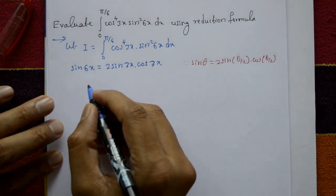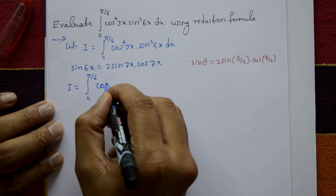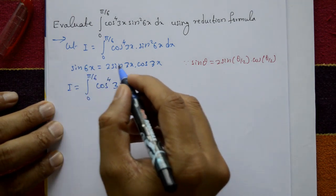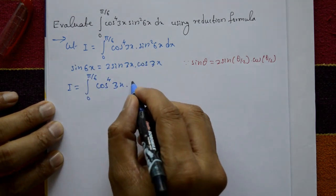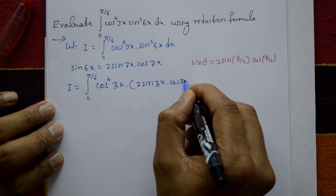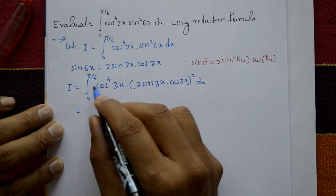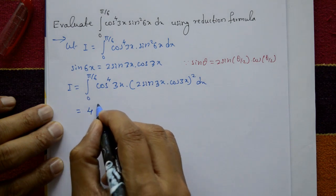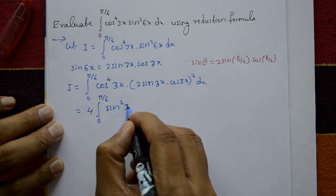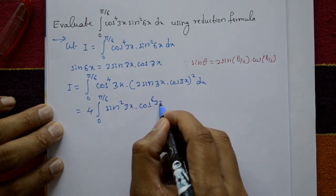Using this formula: i = ∫₀^(π/6) cos⁴(3x) · sin²(6x) dx. Now sin²(6x) = (2·sin(3x)·cos(3x))² = 4·sin²(3x)·cos²(3x). So i = ∫₀^(π/6) cos⁴(3x) · 4·sin²(3x)·cos²(3x) dx = 4∫₀^(π/6) sin²(3x)·cos⁶(3x) dx.